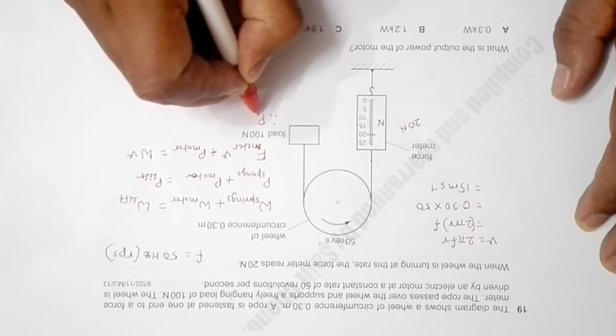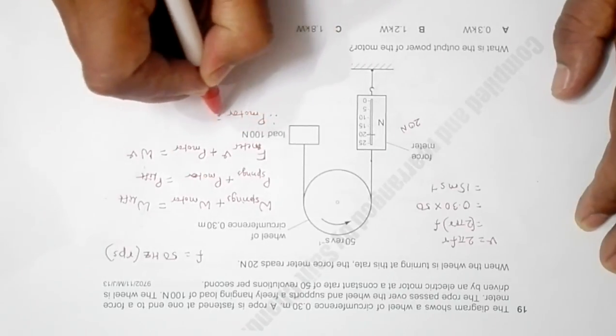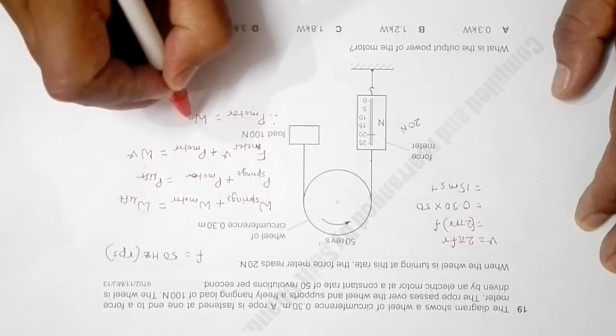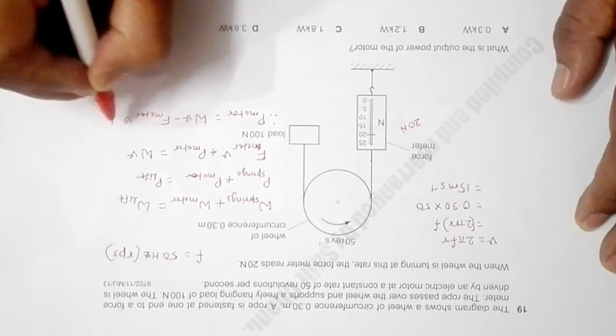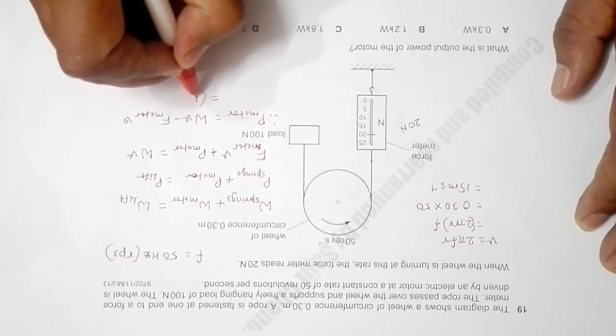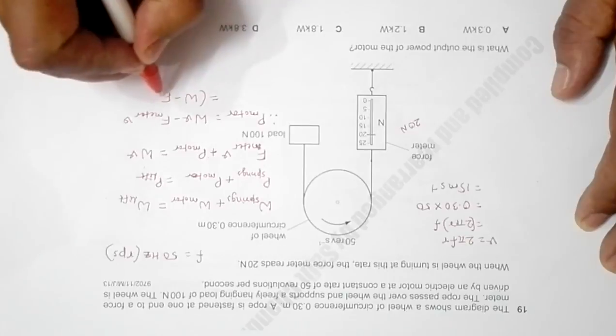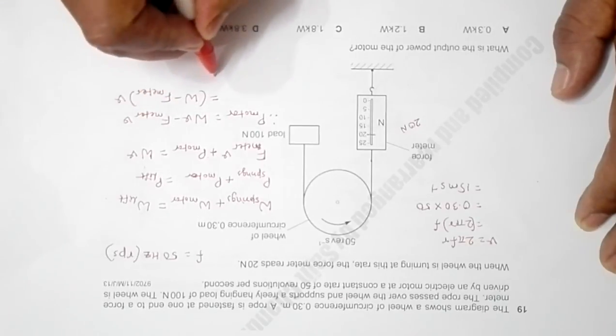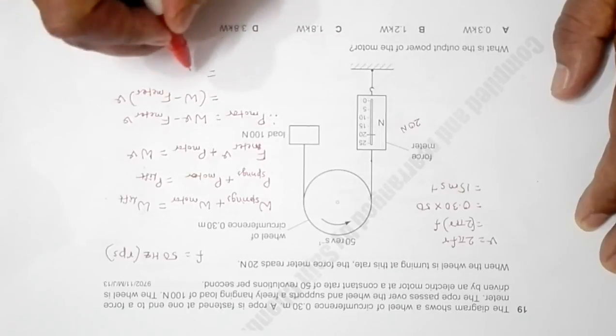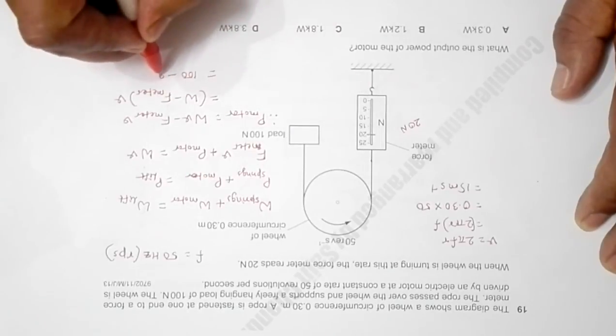Therefore, power of the motor will be equal to W V minus force meter into V, so I can have W minus force meter into V.